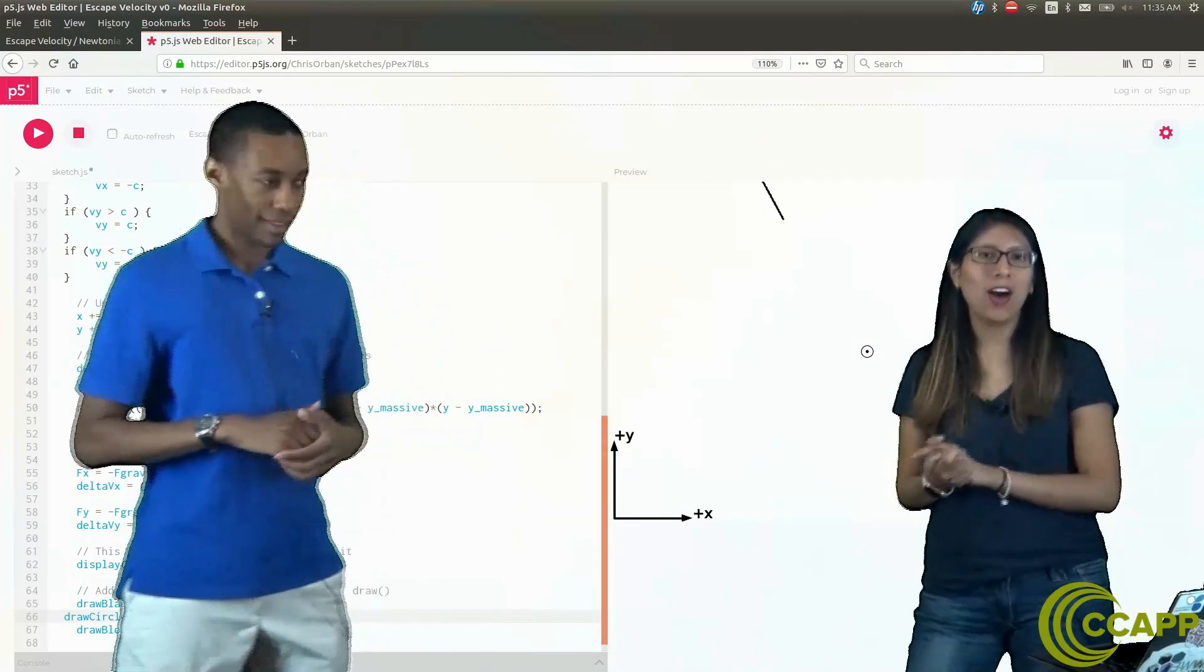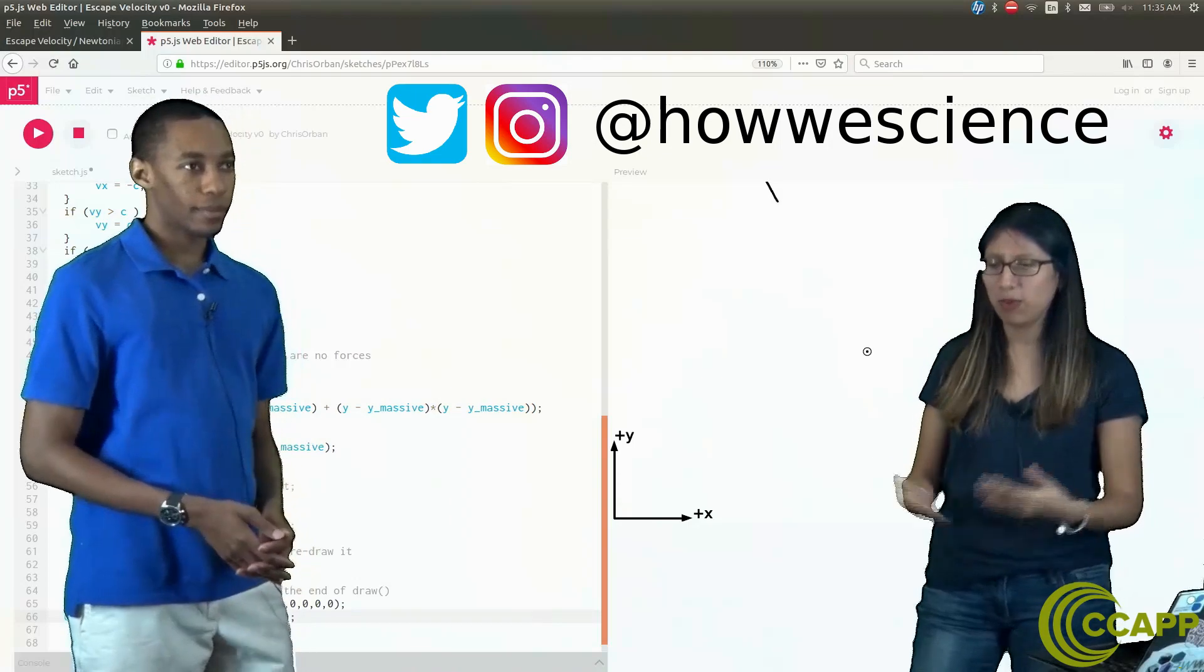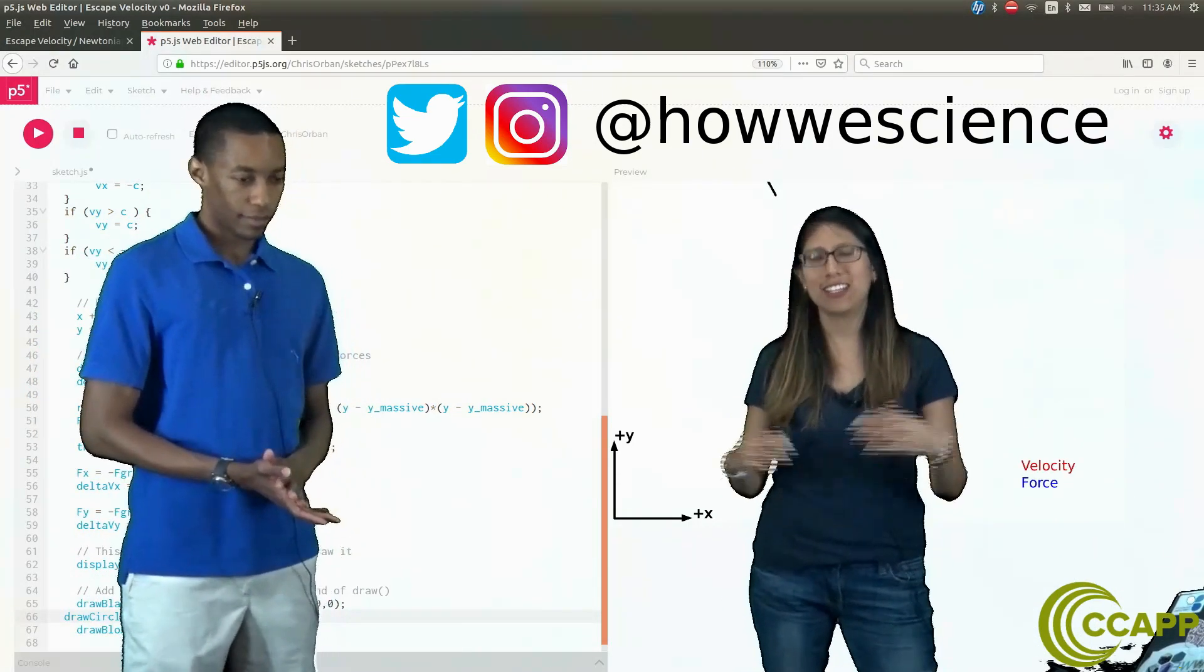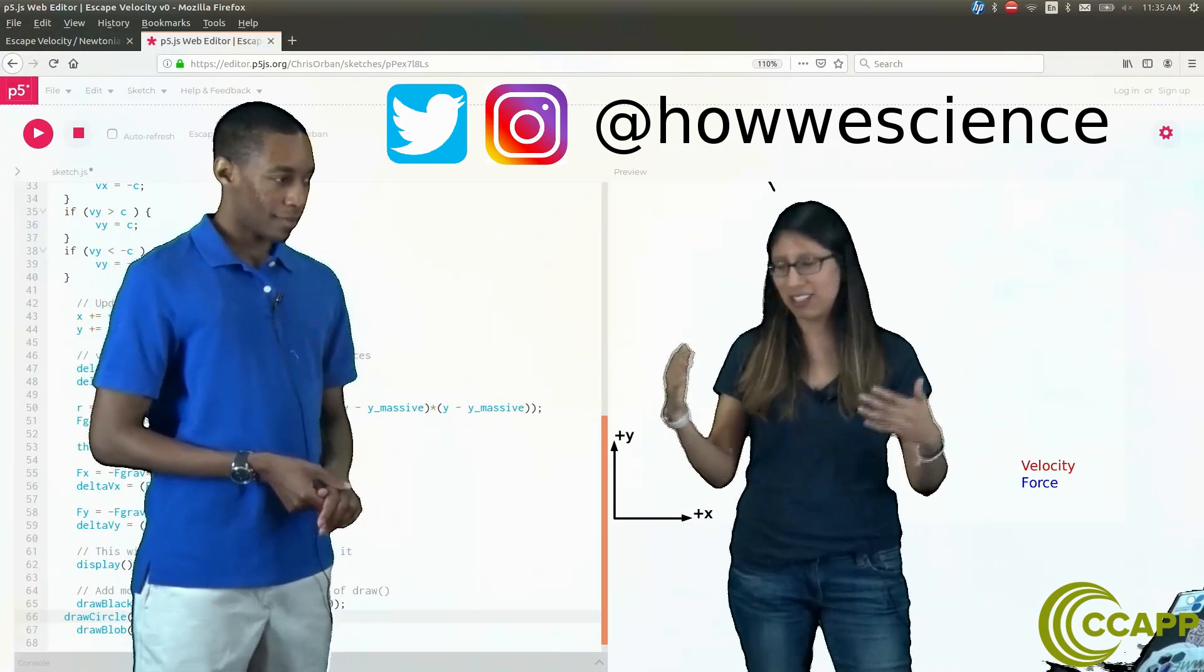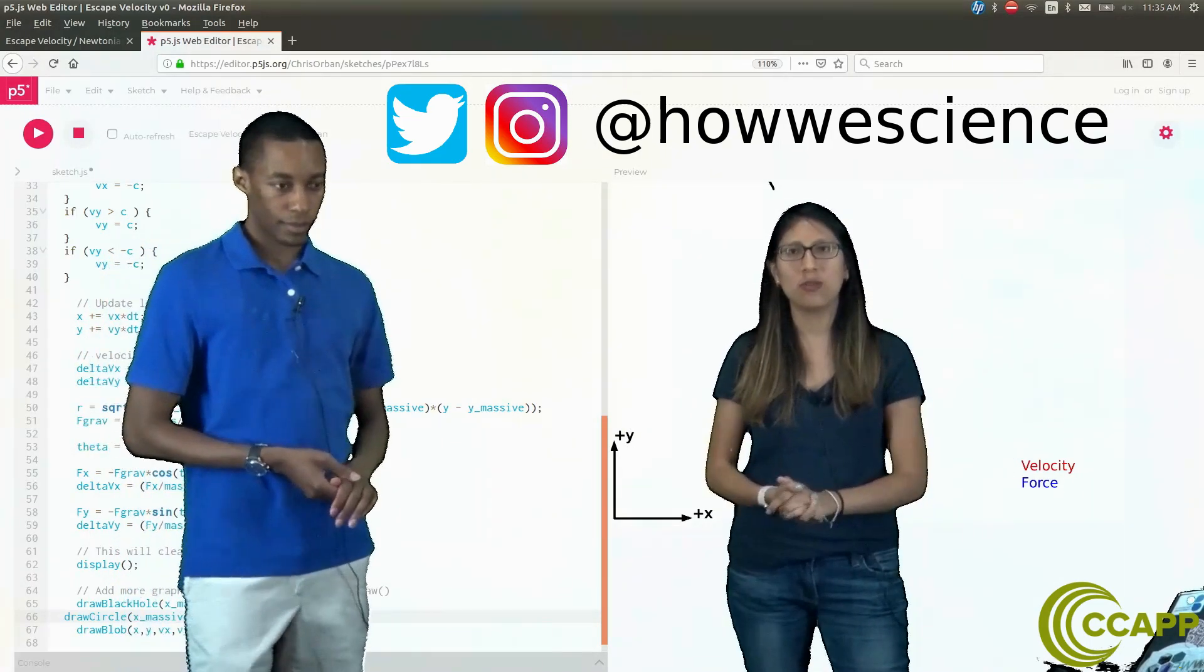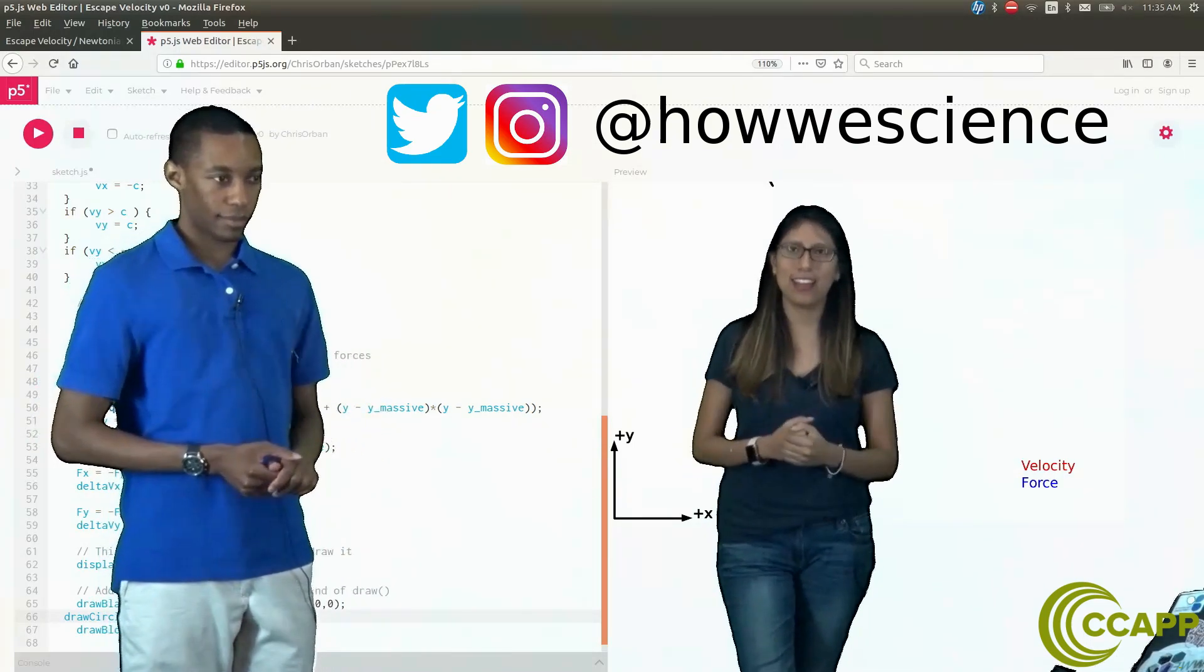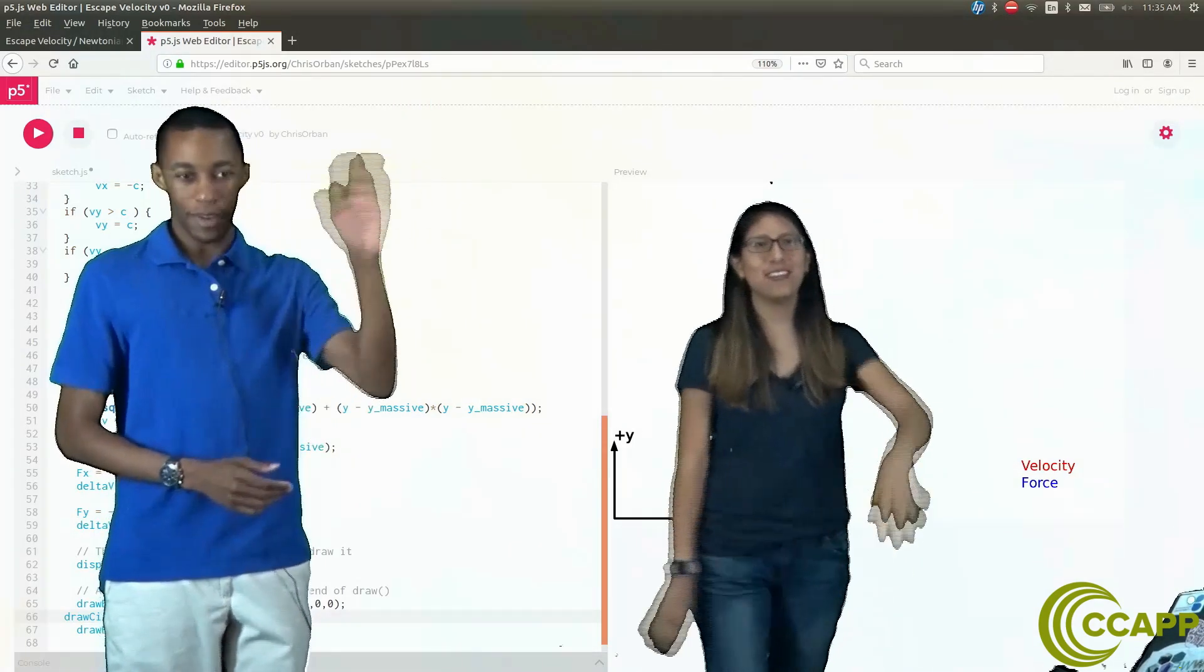Remember, there's also another social media page called Howie Science, where we post about what it's like being a graduate student, the activities that we do, different meetings, our research. Make sure to check us out on Howie Science. We're on Instagram and Twitter. See you there, bye.